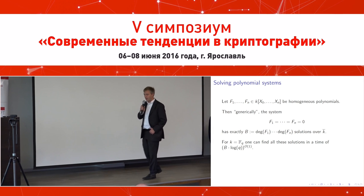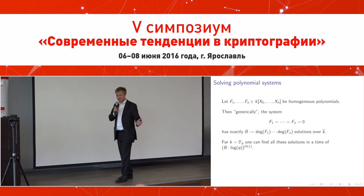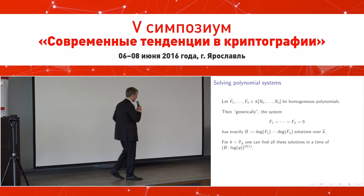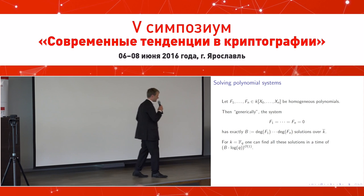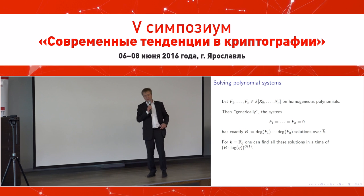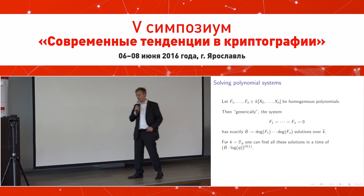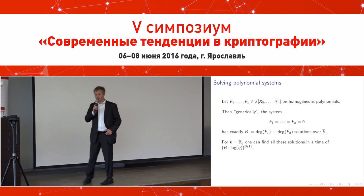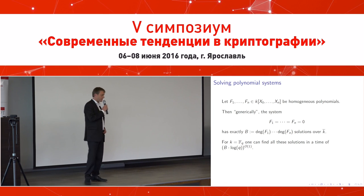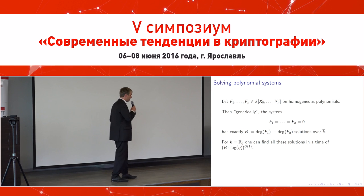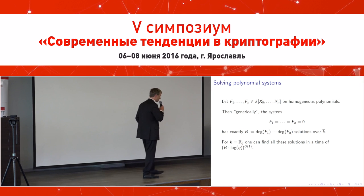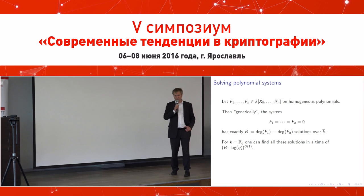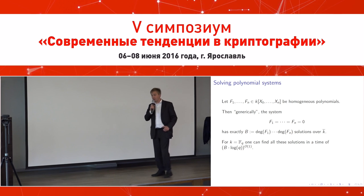The next question is: what if you have more equations than unknowns? This is where so-called semi-regularity comes in. As Igor Semaev already presented, if you have twice as many equations as variables and the equations are quadratic, you still get an exponential running time.